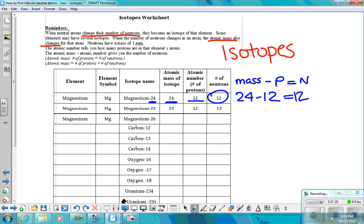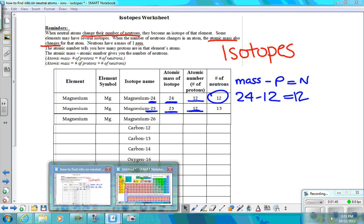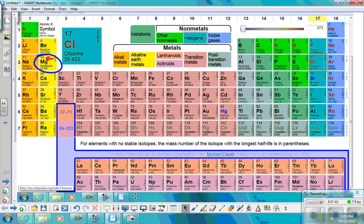Again, if you take a look at this, magnesium-25, that 25 tells us the mass. Again, we know that there are 12 protons because when we look at the periodic table, magnesium has an atomic number of 12. Atomic number tells us how many protons there are.